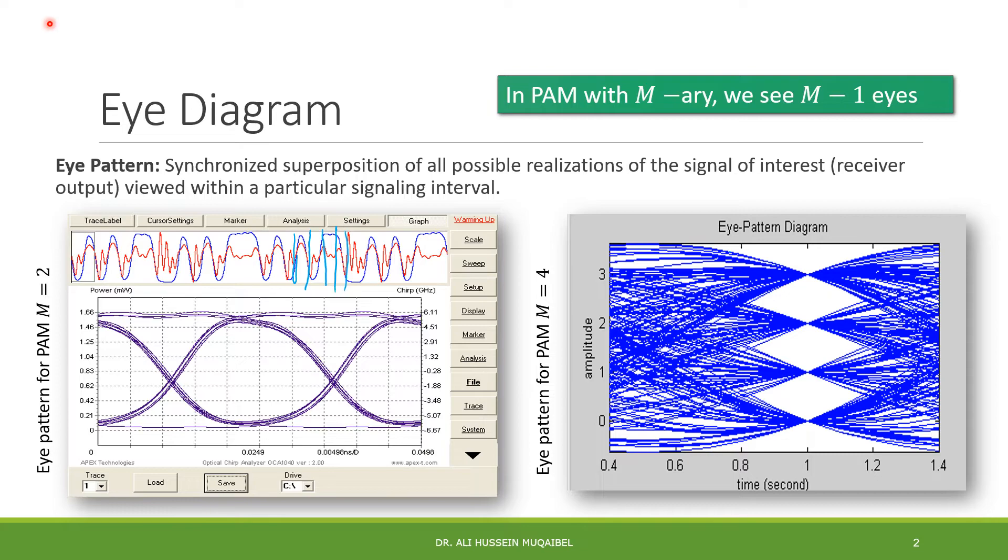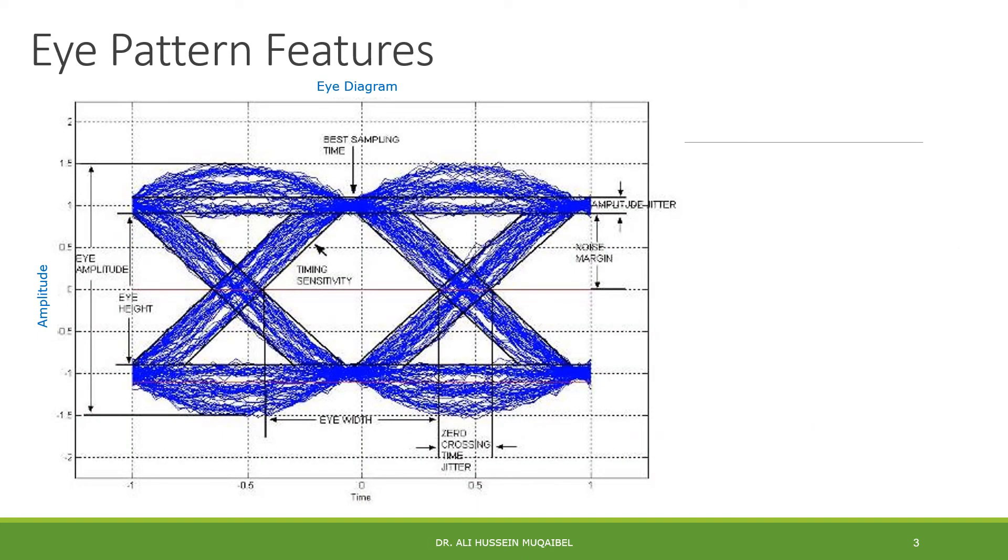Now let's look at the features of the eye pattern. What you see in front of you is an eye. This is an example of M equal to 2 pulse amplitude modulation. You can see that we have a positive pulse or a negative pulse. These are the side pulses. This is caused by ISI and other stuff.